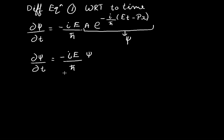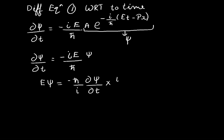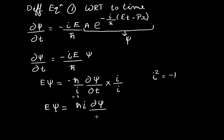Rearranging to get E·psi, we have: E·psi = minus ℏ·iota · d·psi/dt. Multiplying and dividing by iota, iota² = minus 1, so minus times minus gives plus. Our expression becomes: E·psi = ℏ·iota · d·psi/dt. Call this equation number two.